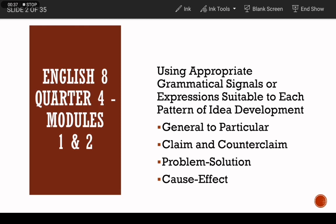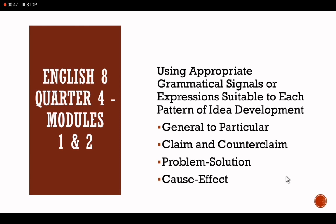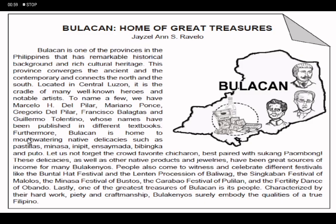Let's begin with our Quarter 4, Week 1 lesson — English 8, Quarter 4 Modules 1 and 2: Using appropriate grammatical signals or expressions suitable to each pattern of idea development. Under this, we will talk about the patterns: general to particular, claim and counterclaim, problem-solution, and cause-effect. Here we can see an article or a passage made by Jaisal Ann S. Ravelo — 'Bulacan: Home of Great Treasures.' Please take time to read this article.